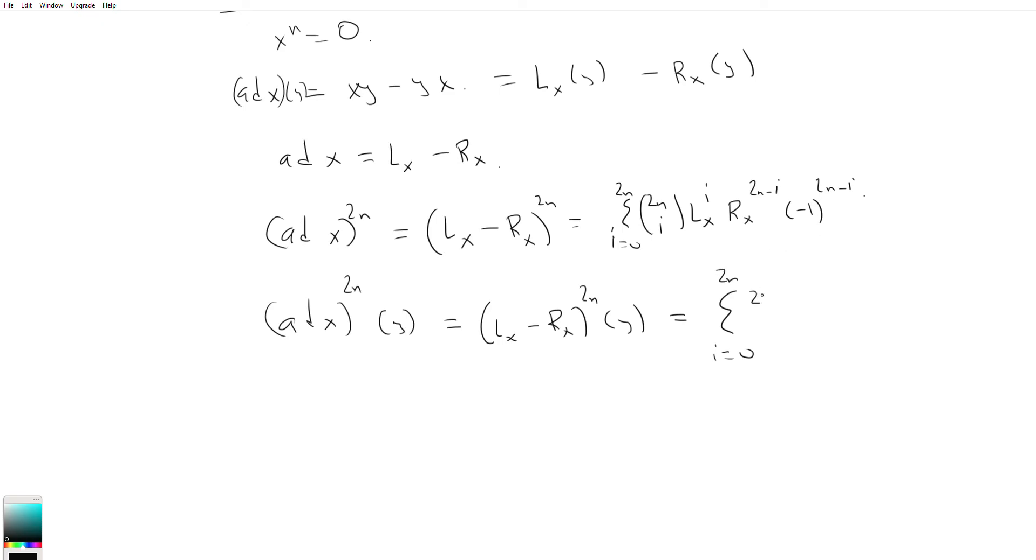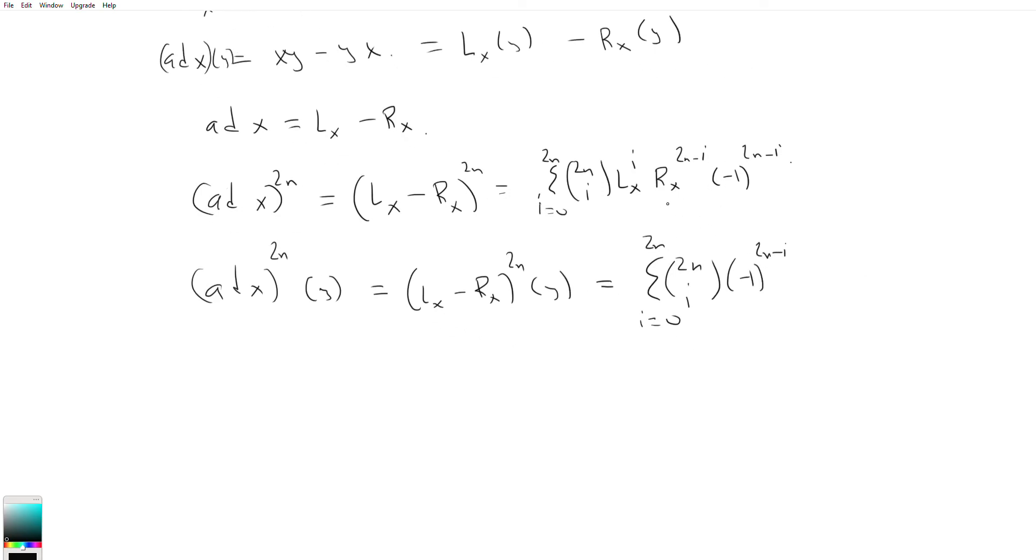I'm going to move all the constants out front because they don't affect anything, the scalars. Minus 1 to 2n minus i. And so really, it's going to be R_x to the 2n minus i acting on y, which is just going to be left multiplication by x to the 2n minus i times. And it's going to be L_x of i times y, which is going to be left multiplication by x i times. So great.